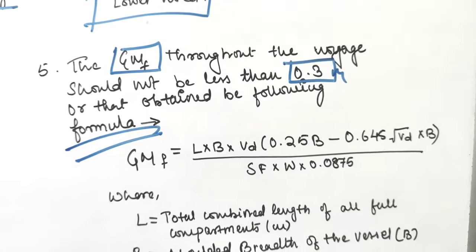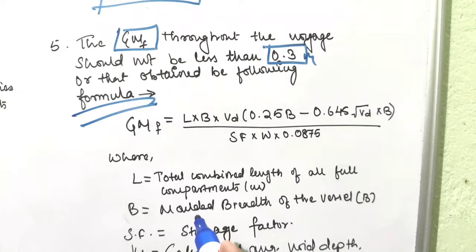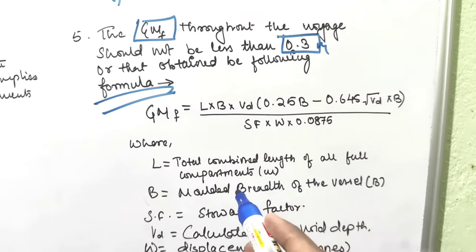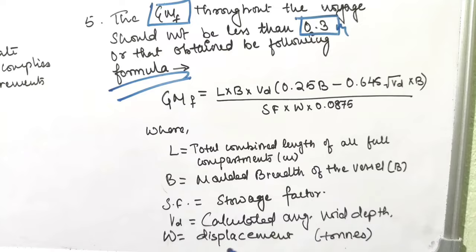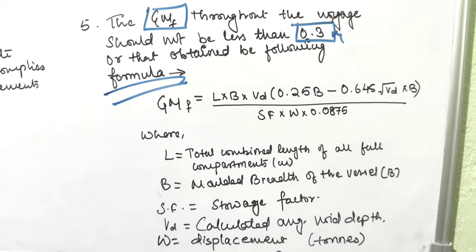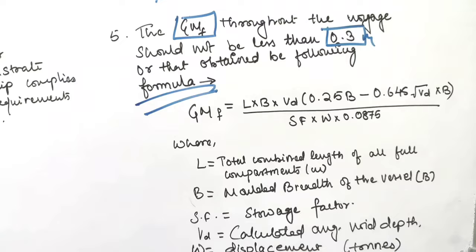The formula is GMf = (L × B × Vd) / (SF × W), where L is the total combined length of all full compartments, B is the molded width of the vessel, SF is the stowage factor, Vd is the calculated average void depth, and W is the displacement in tons. This formula I don't think you need to remember it, but you need to remember the 0.3 meters.